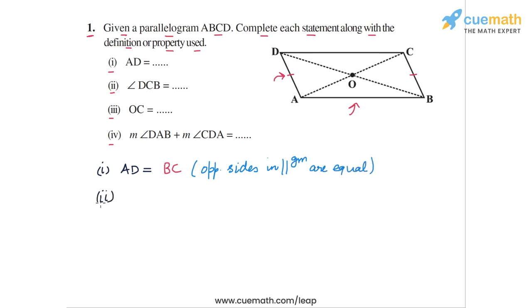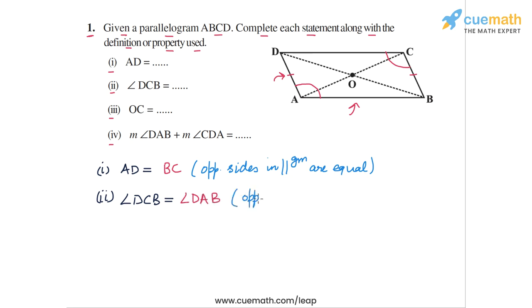In the second statement, we have angle DCB equal to what? Angle DCB is this angle here, and we know that in a parallelogram, opposite angles are equal. So angle DCB will be equal to angle DAB, because this is opposite to angle DCB. The second statement is completed as angle DCB is equal to angle DAB, and the reason is that opposite angles in any parallelogram are equal.